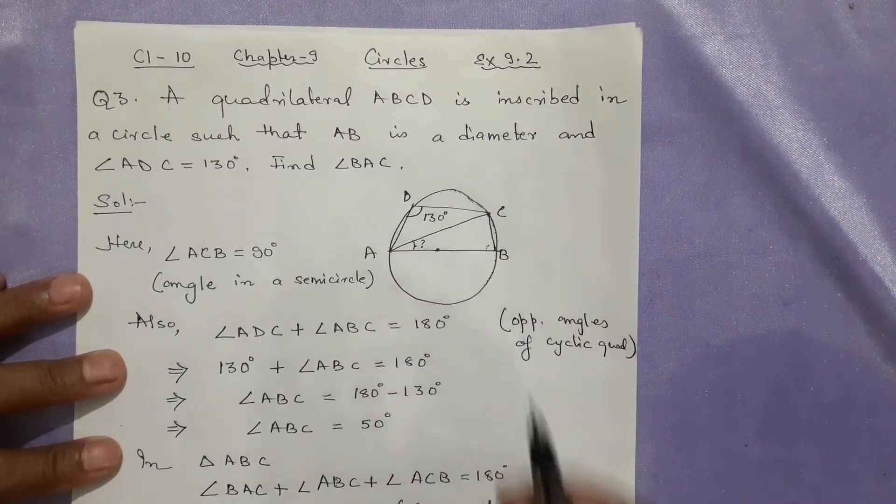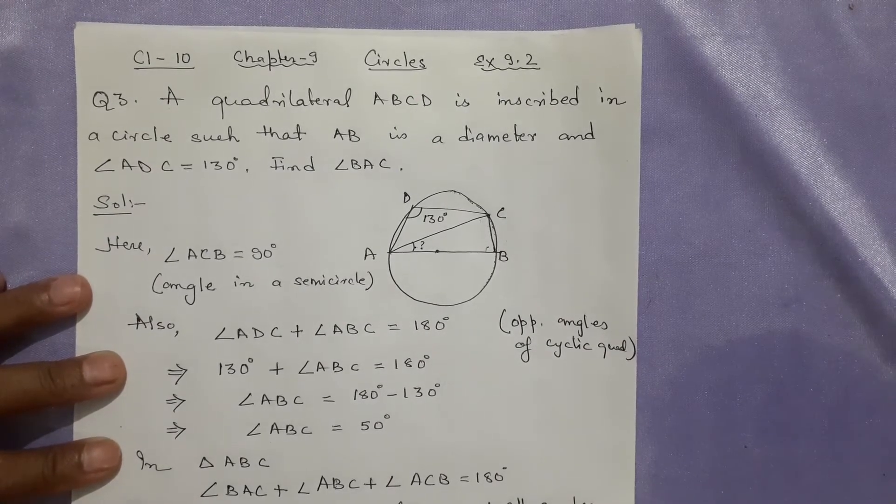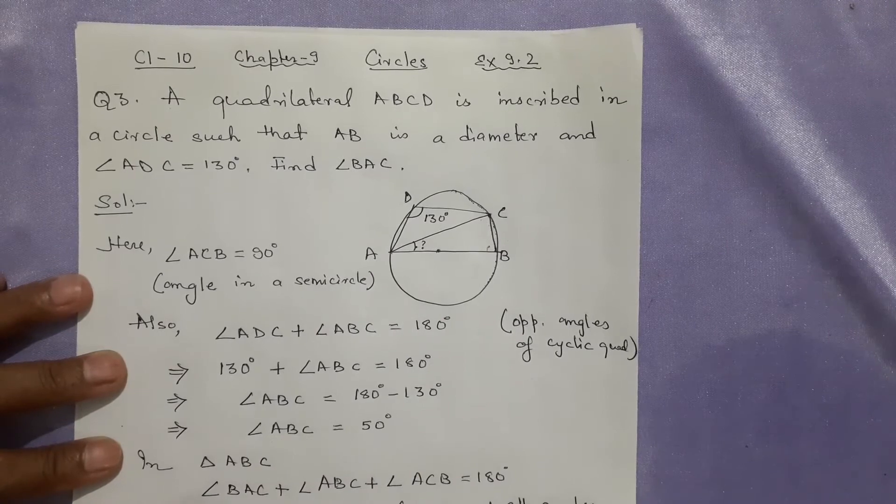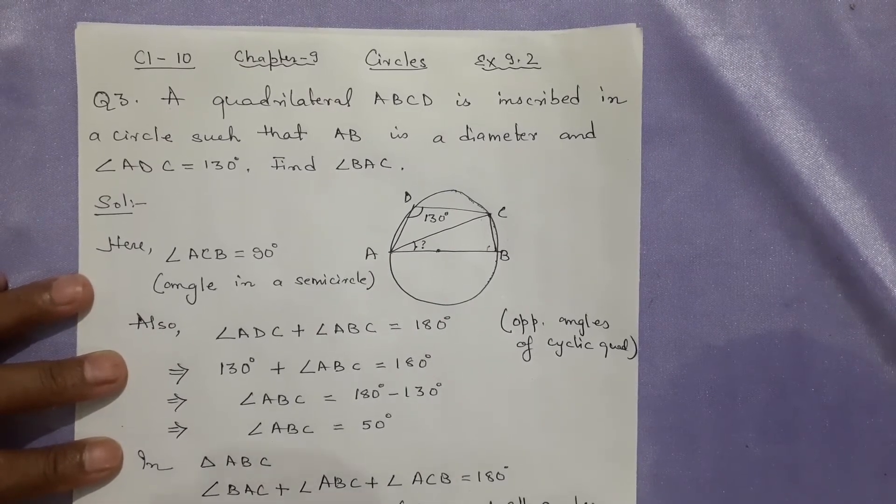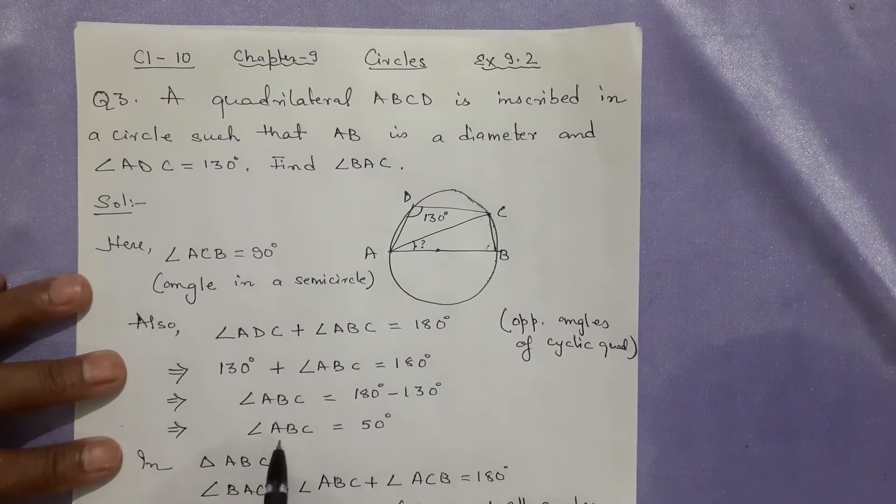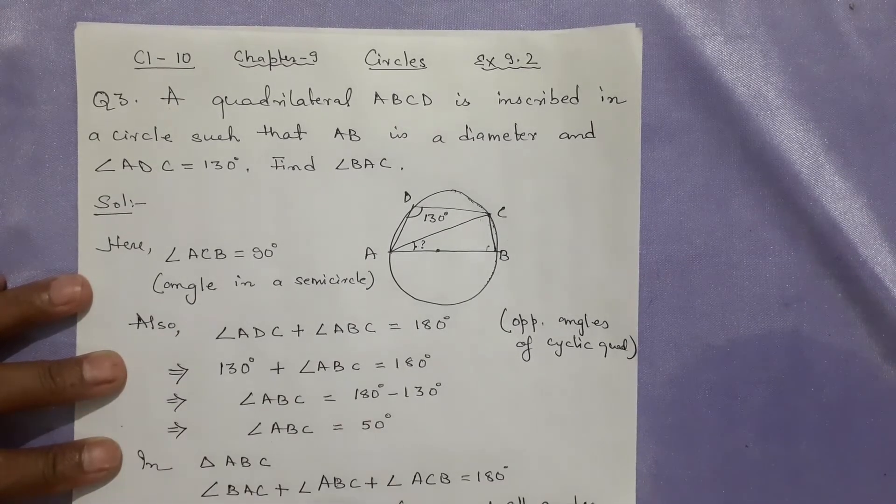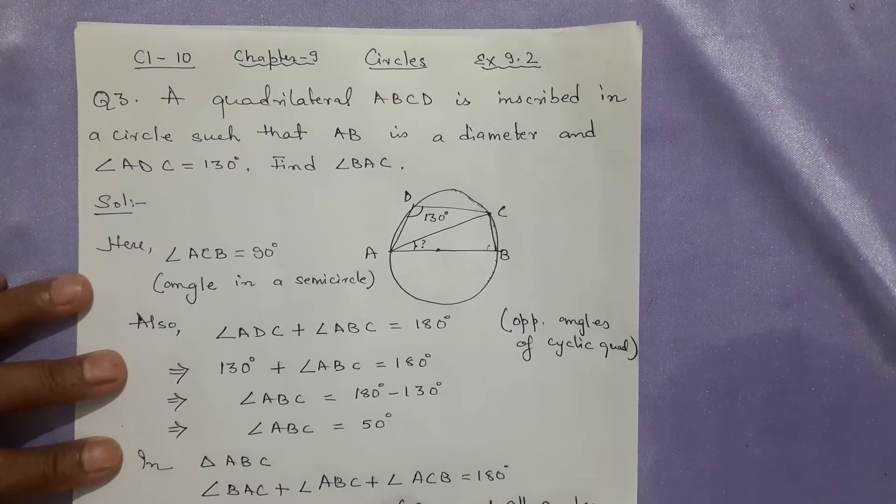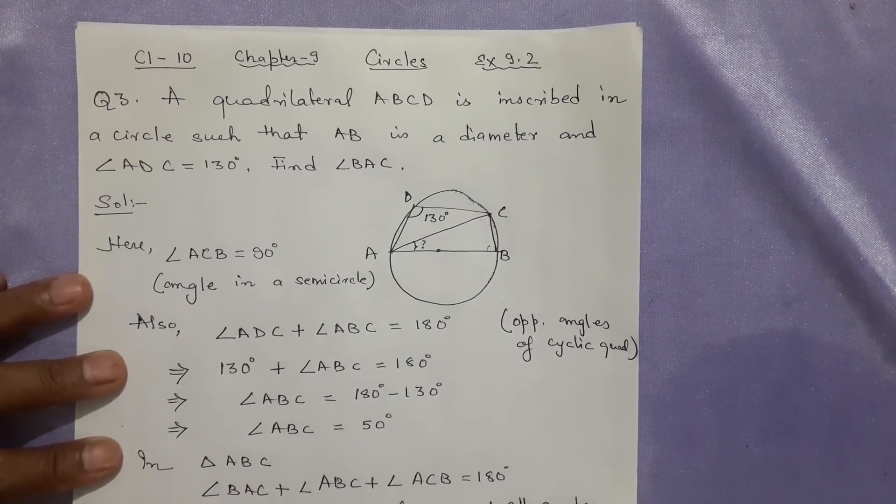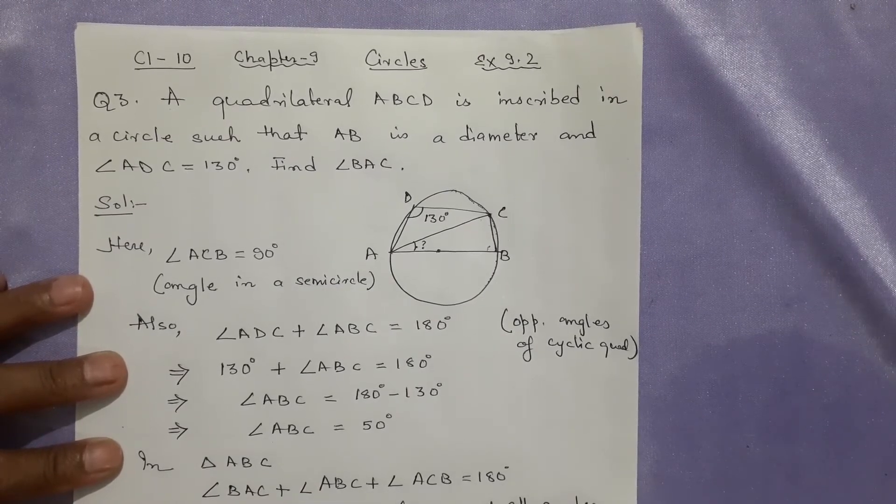What is BAC? BAC is not known—you have to find it. What is ABC? ABC is 50°. What is ACB? ACB is 90° as replaced from earlier. These equal 180°. Send them to the other side: 50 and 90 both are subtracted, so angle BAC equals...